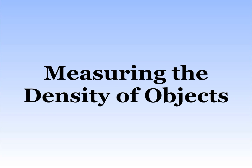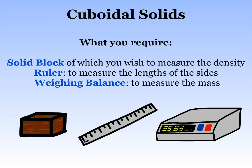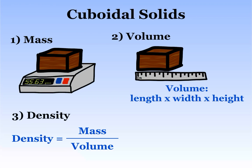Now let's have some experiments. First, we have cuboid-shaped solids — these are the easiest ones to measure the density of since they have a regular shape. You will need a ruler and a weighing balance to make the necessary measurements. First, measure the mass of the block using the weighing balance. Second, measure the length, width, and height of the block using the ruler. Finally, use your results for mass and volume in the density formula to find the density of the block.